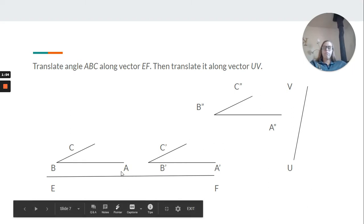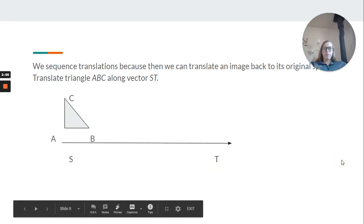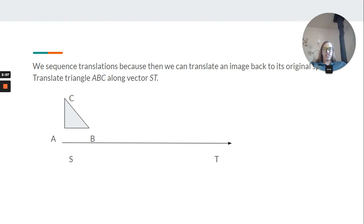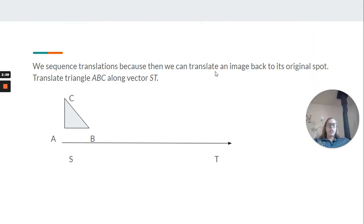So we have along EF, and then along UV. We sequenced the translations because then we can translate an image back to its original spot.